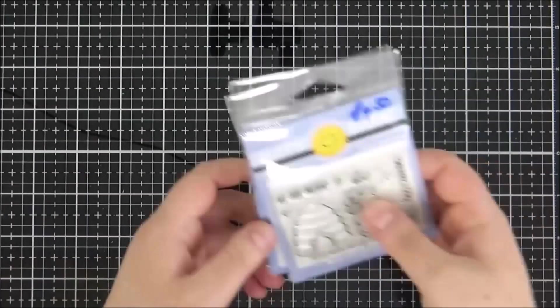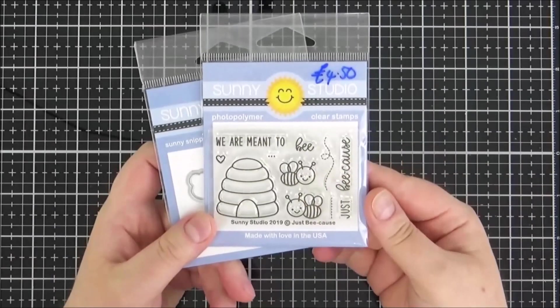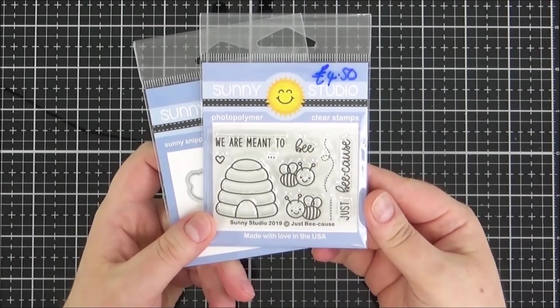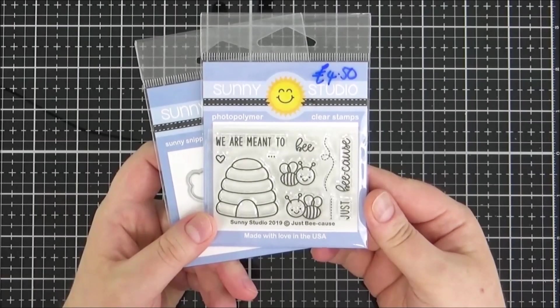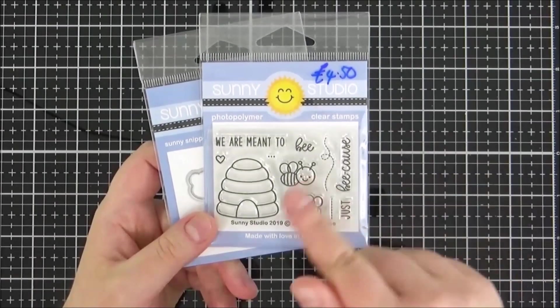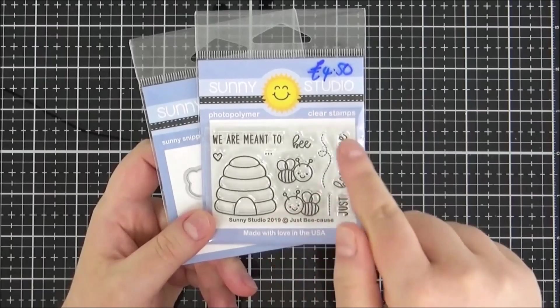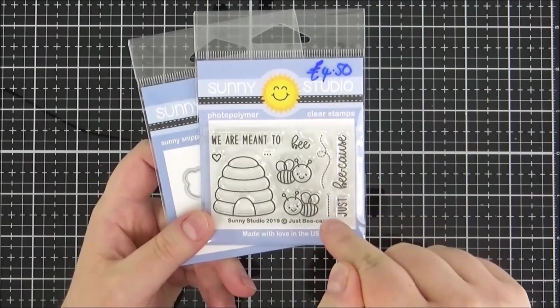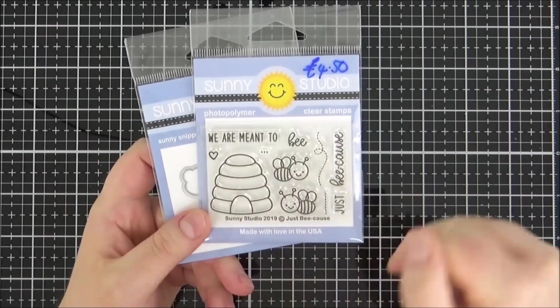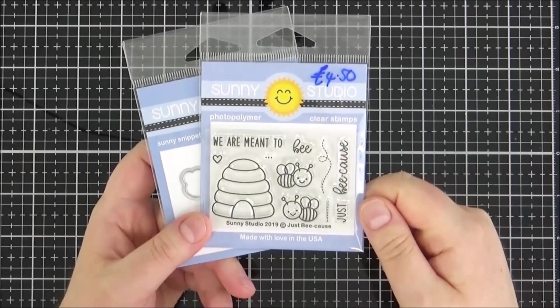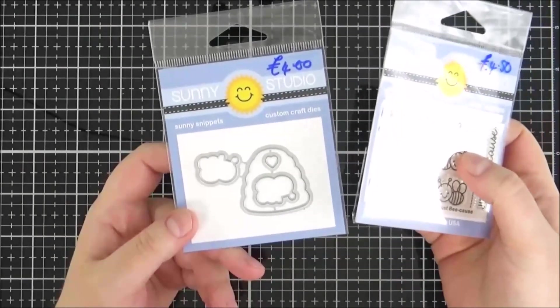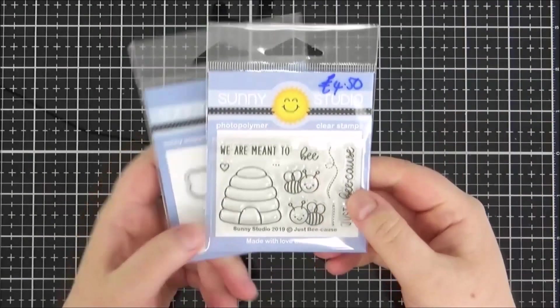And then also from Dies to Die For I picked up this little set here. This is the Sunny Studio Just Because set. I just thought it was so so cute. I love these cute little bees and then the beehive there. You've got the little trails there for the bees as well and the two sentiments. I just thought it was a really cute little sweet set and I did pick up the coordinating dies to go with them as well.